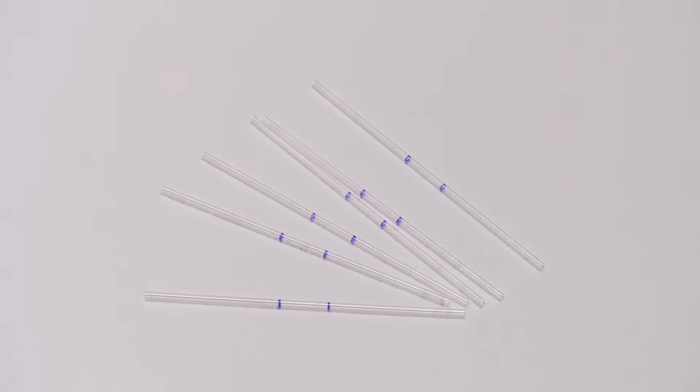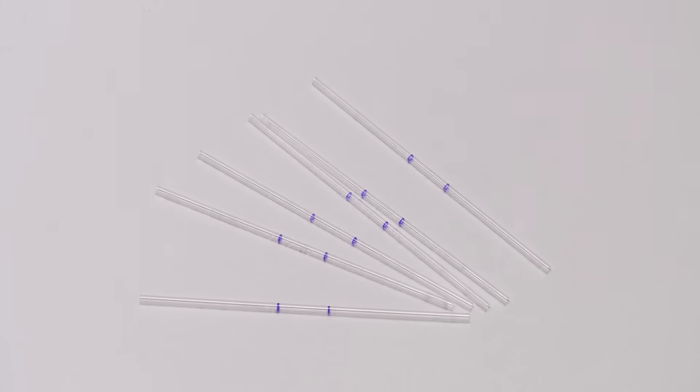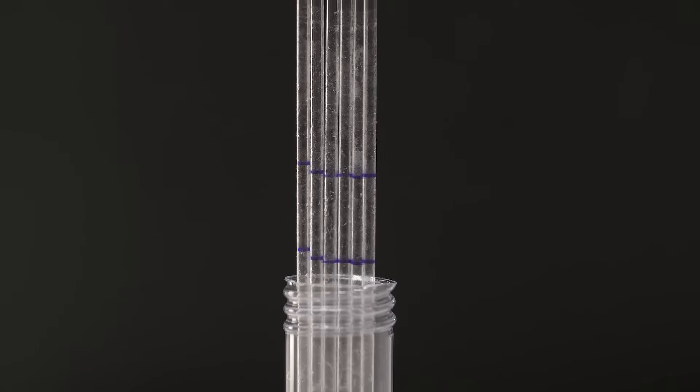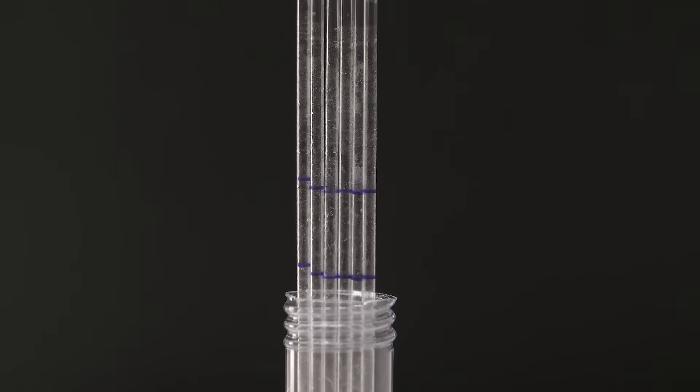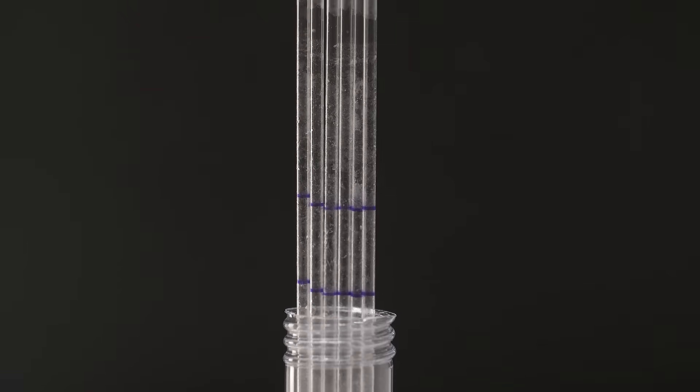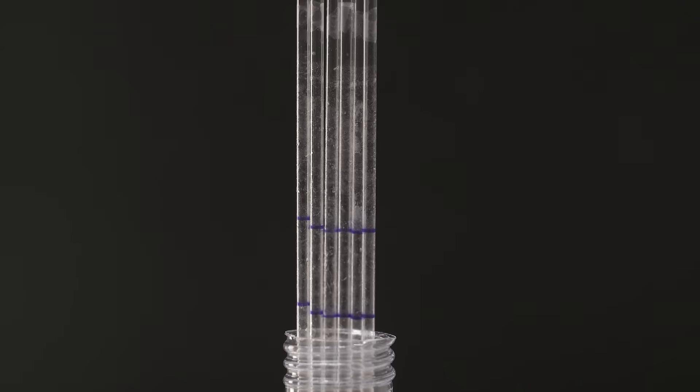Drummond's dual fill capillary tubes have a unique ability to be filled at either end of the tube to the predetermined volume line. This ensures the end user will never have to dispose of the tube due to accidentally filling from the wrong end.